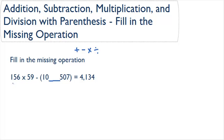Let's look at our problem. Here we have 156 times 59 minus, in parentheses, 10, some operation, 507, is going to equal 4,134.